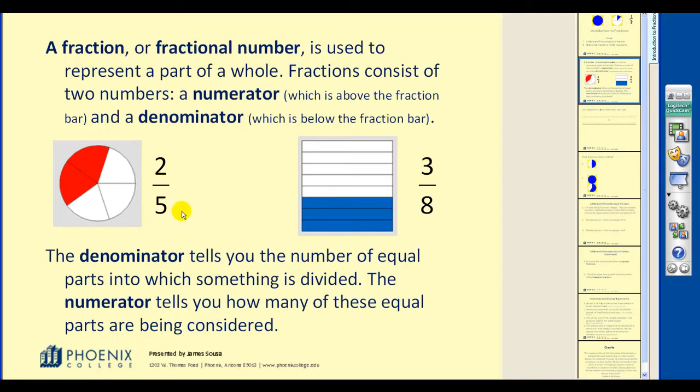So, for example, this fraction two fifths, notice how the circle is divided into five equal parts, with two of them being shaded. Over here we have three eighths, where we have divided into eight equal parts. Again, three of them shaded.